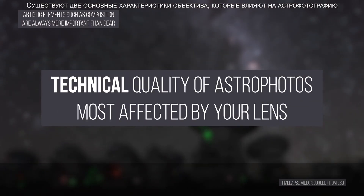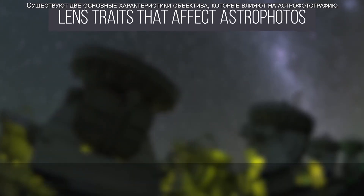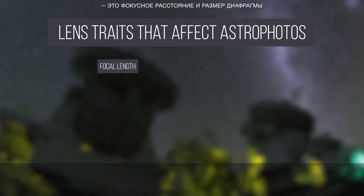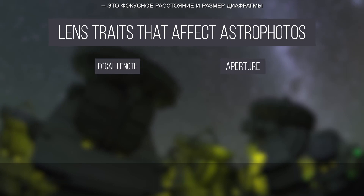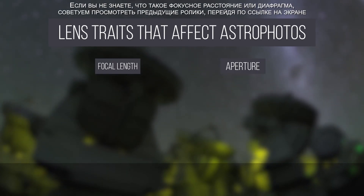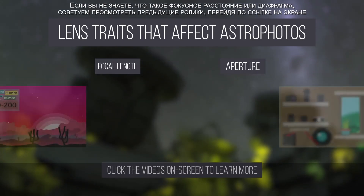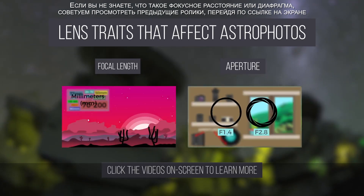There are two basic traits of a lens that will affect how to take your astrophotos: focal length and aperture size. If you don't know what focal length or aperture are, I have videos on those already, so click the videos on screen to learn more.